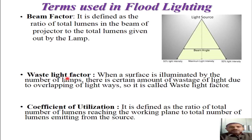The second most important factor is the waste light factor. This factor is associated with flood lighting design because when we require projectors to illuminate a given surface, there will be certain overlapping of the various light ray circles produced by the different projectors. To account for that wastage of light due to overlapping when illuminating a given surface, we have to consider the waste light factor. It depends upon the number of projectors, the situation of the surface, and the distance of the projector from the surface.